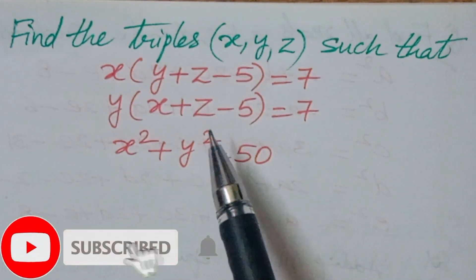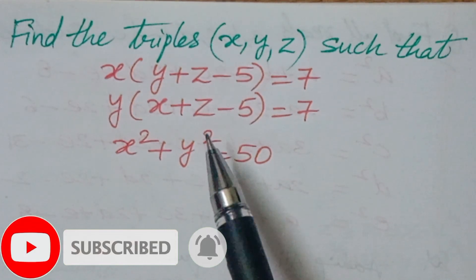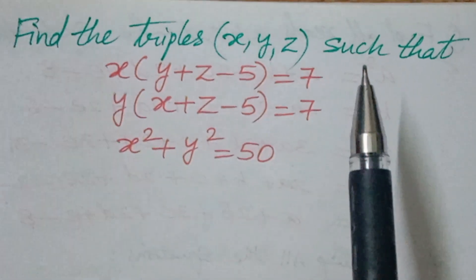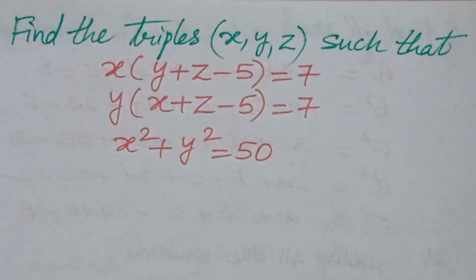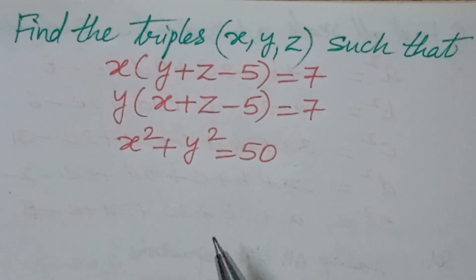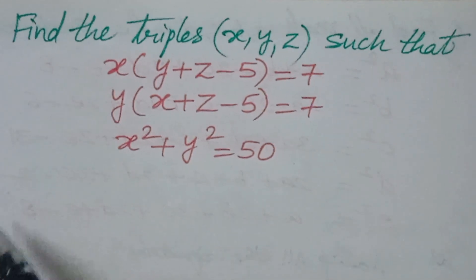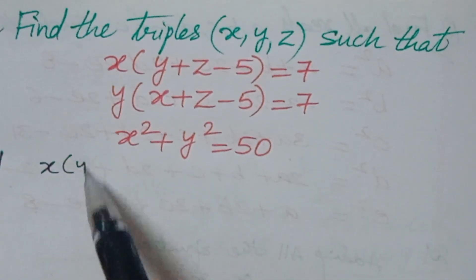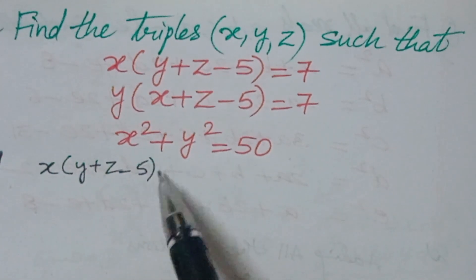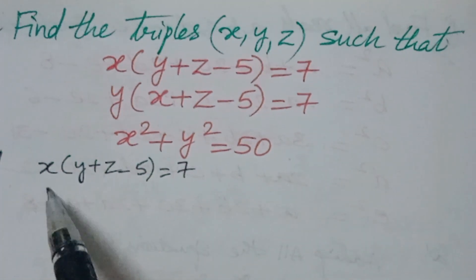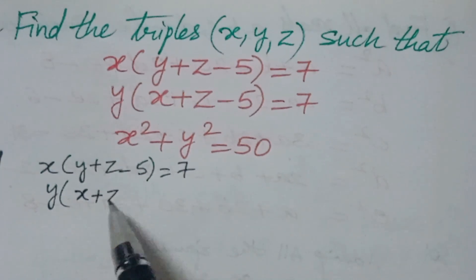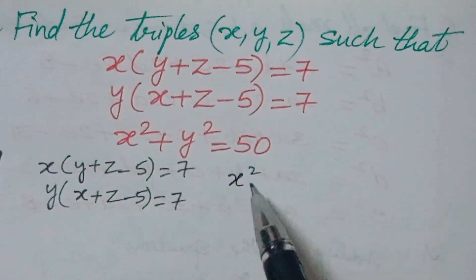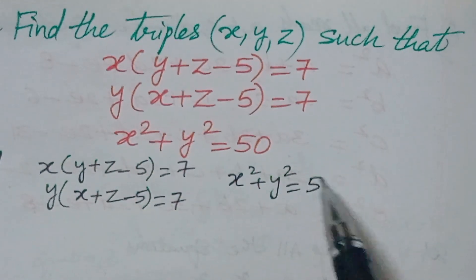Before starting, pause the video and try it. If you are new to the channel, please subscribe and give it a thumbs up — it encourages us to make more videos. So, how to solve this problem? First of all, take the given equations: x(y + z − 5) = 7 and x² + y² = 50.